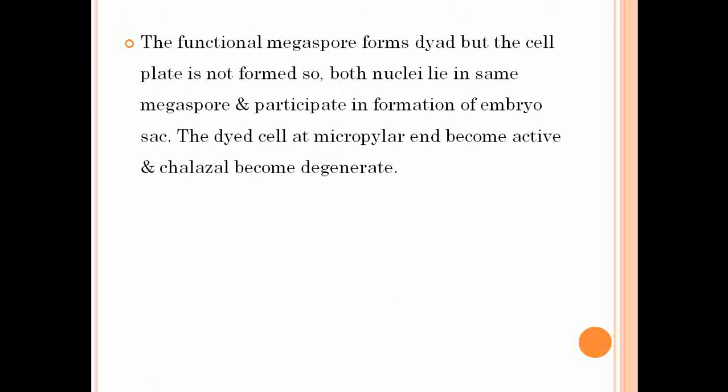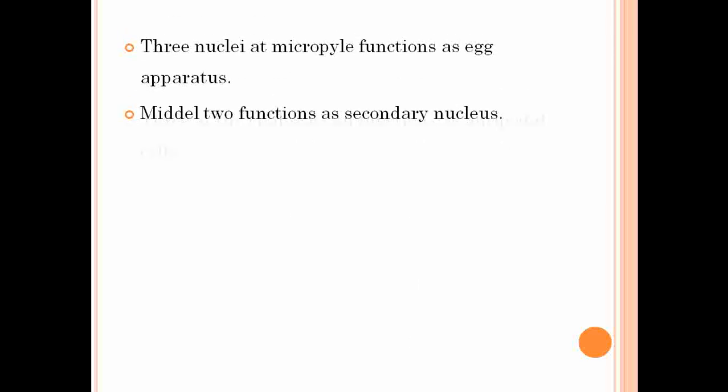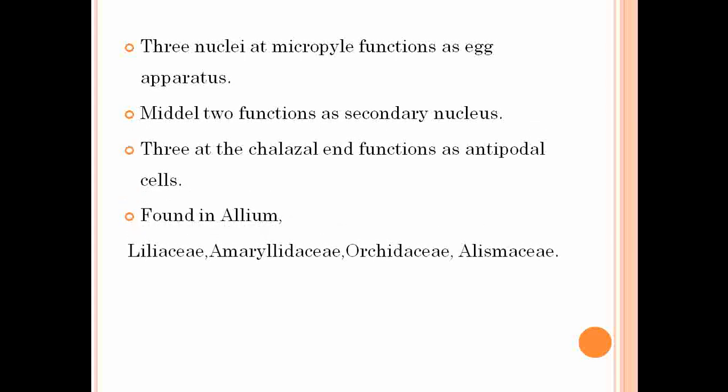The Allium type of embryo sac is observed in the genus Allium and in families like Liliaceae, Amaryllidaceae, Orchidaceae, and Alismataceae.